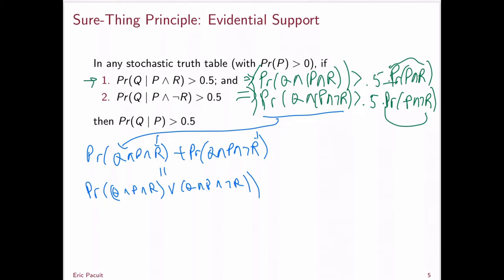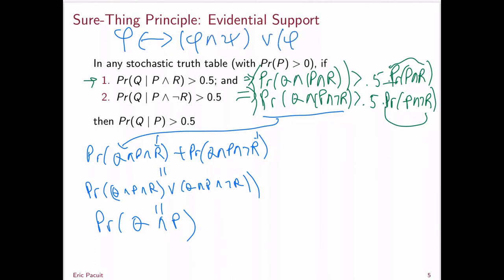Now, (Q∧P∧R) ∨ (Q∧P∧¬R) is actually logically equivalent to Q∧P. This uses the principle that φ is always logically equivalent to (φ∧ψ) ∨ (φ∧¬ψ). Here, φ is Q∧P and ψ is R. So the sum of the two terms on the left-hand side is just equal to the probability of Q and P.